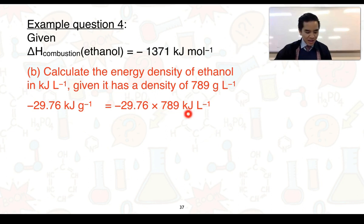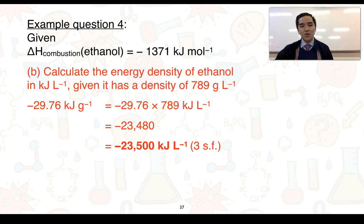We've got our previous answer of −29.76, multiply that by 789, we get a value of −23,480 which would be in kilojoules per liter, but I'm going to round it off to three significant figures and that will give us −23,500 kilojoules per liter.